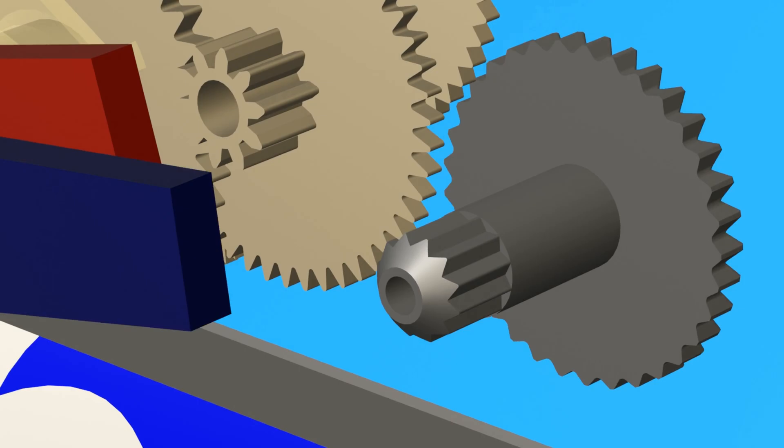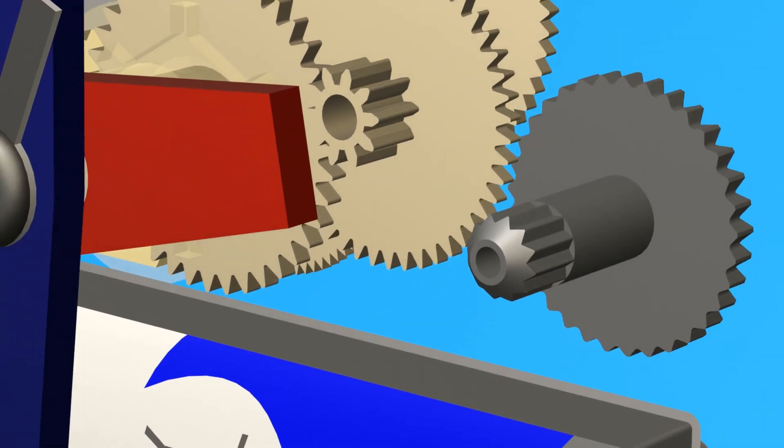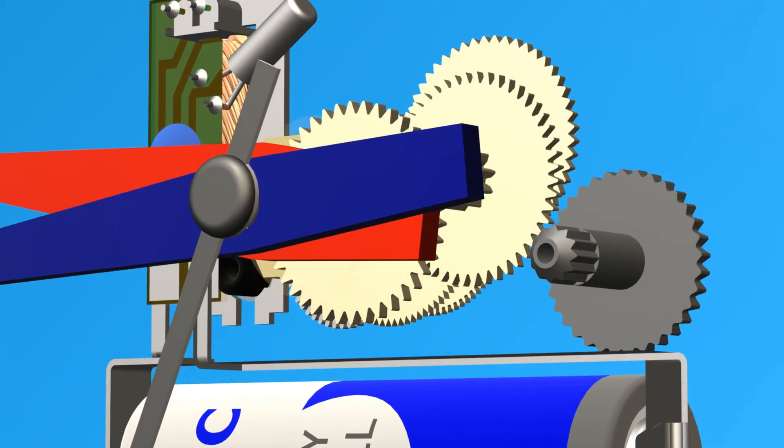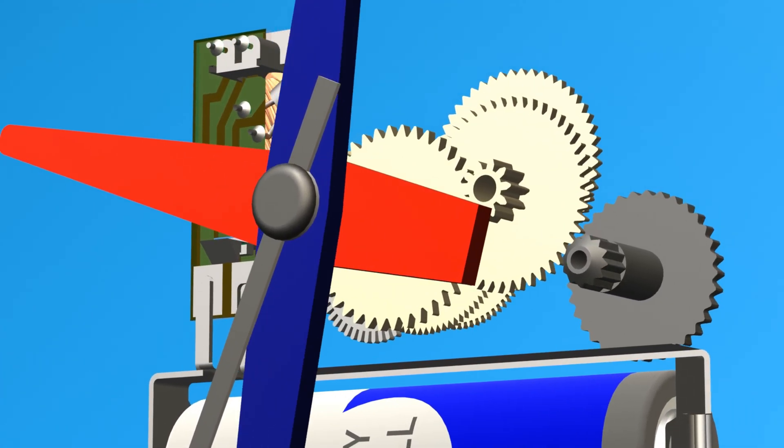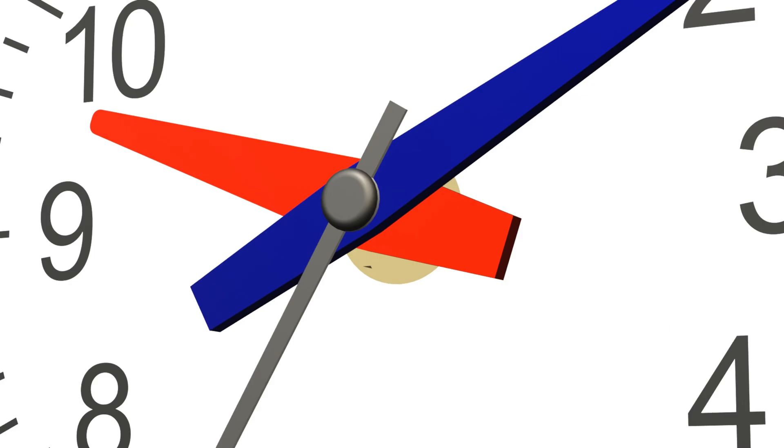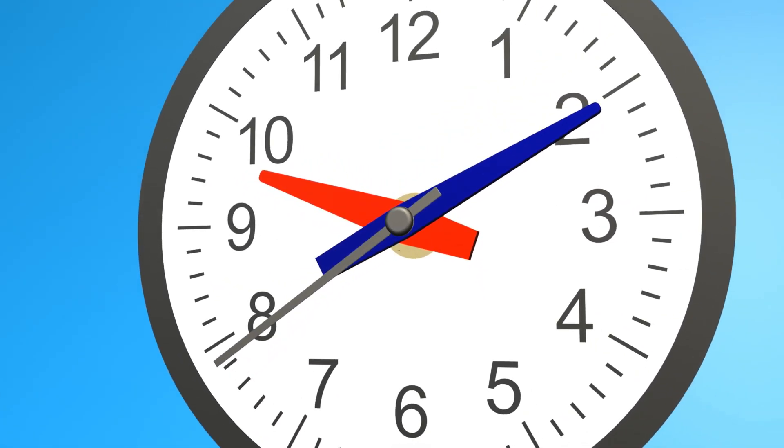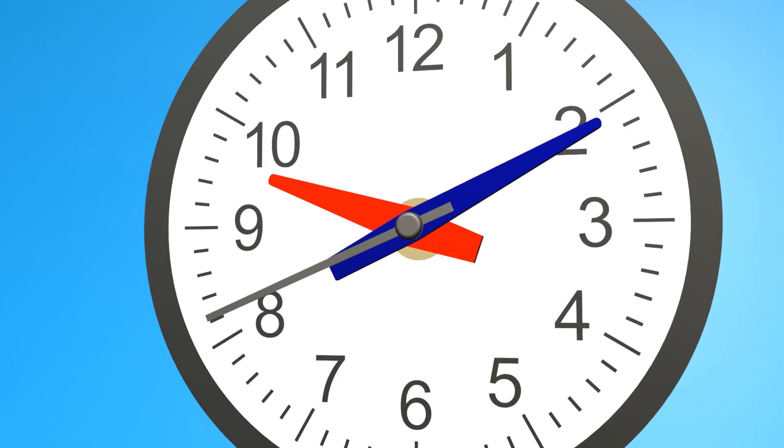However, the gear with the second hand doesn't move, because the two parts of this compound gear slip from the high torque required to rotate the second hand 52 times per rotation of the time setting gear.